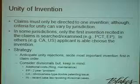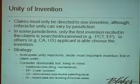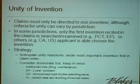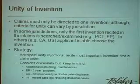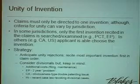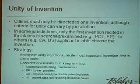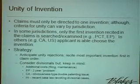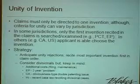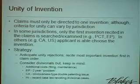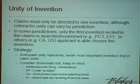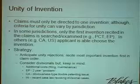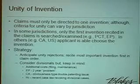Now let me jump to unity of invention. A patent can only be granted for one invention. The criteria vary from jurisdiction to jurisdiction. In Canada and the U.S., if there's a unity of invention issue, the examiner will issue a restriction requirement, and the applicant is entitled to choose which invention they want to pursue. The other inventions can be pursued in divisional applications as needed.